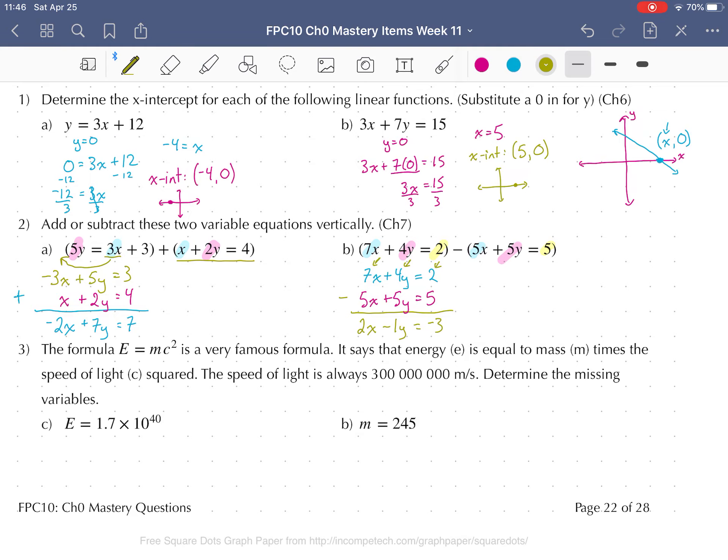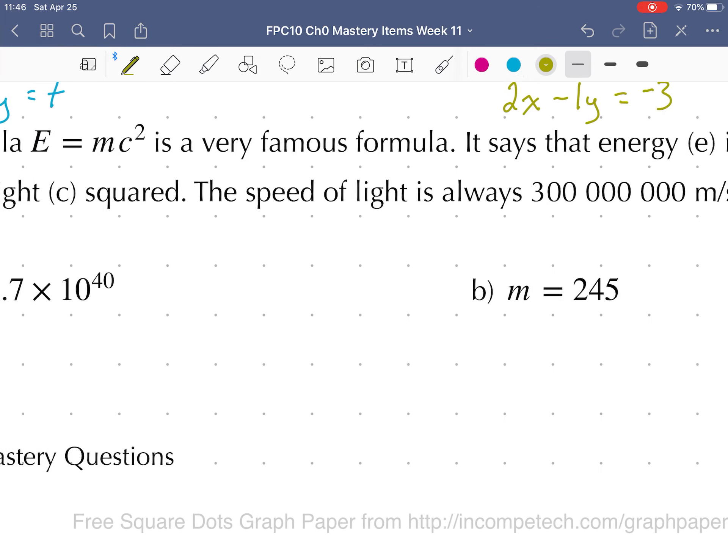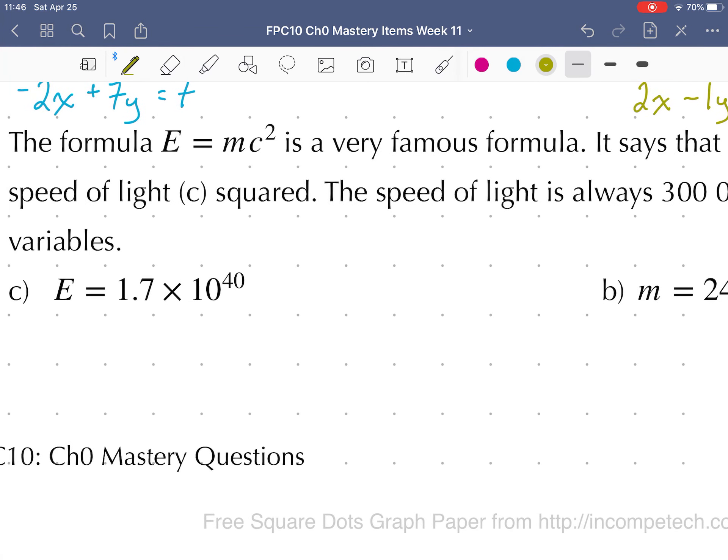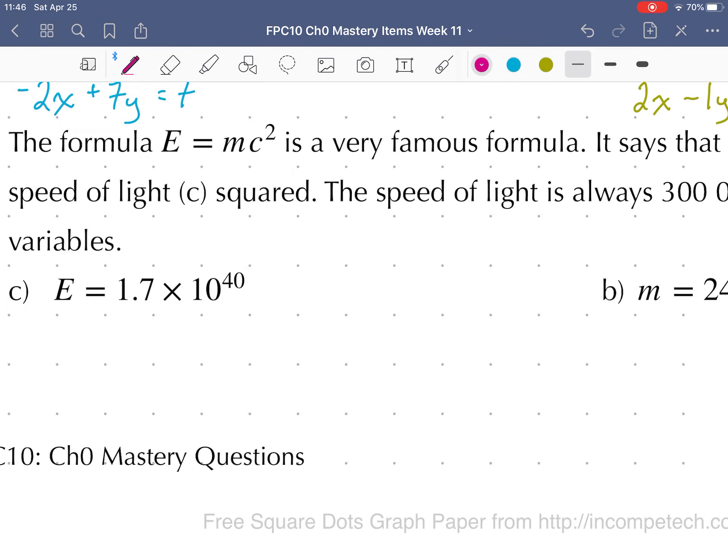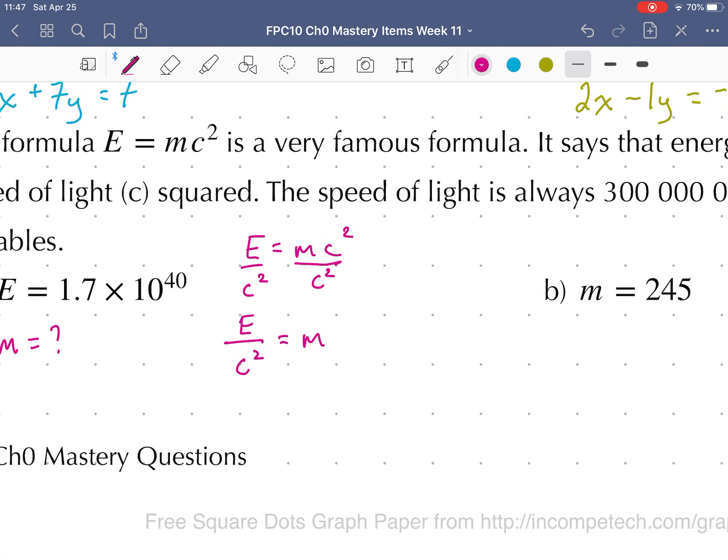Number 3. The formula E equals mc squared is very famous. Energy is equal to mass times the speed of light squared. The speed of light is always 300 million meters per second. So we're looking for our mass. Let's rearrange the formula so our mass is isolated. We divide by c squared. So we get mass equals our energy divided by c squared.